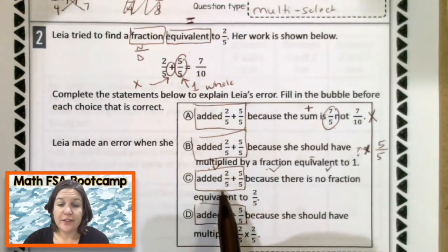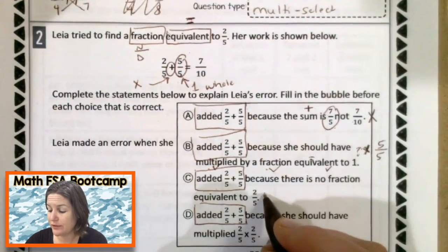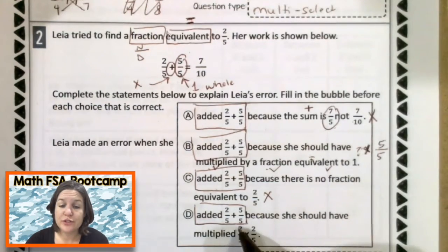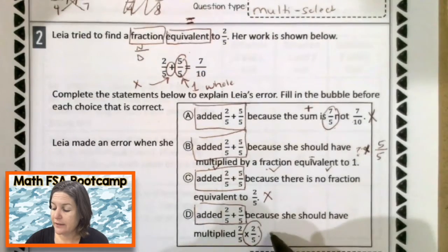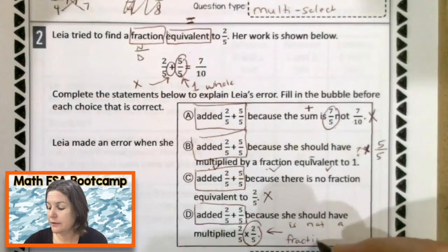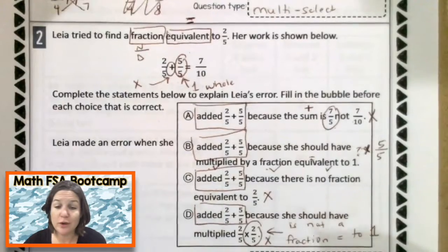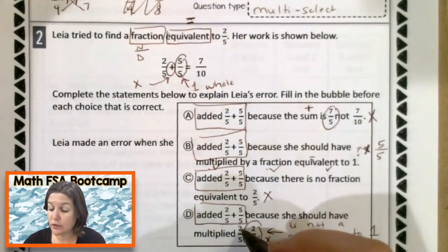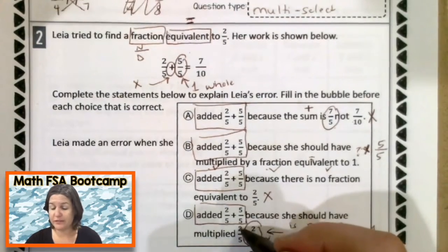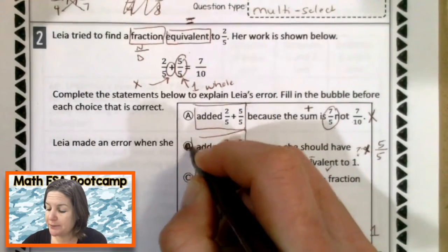C. She added two-fifths plus five-fifths because there's no fraction equivalent. Well, that's wrong because we can totally find a fraction that's equivalent to two-fifths. D. She added two-fifths plus five-fifths. That was wrong because she should have multiplied two-fifths times two-fifths. Well, if she did that, this is not a fraction equivalent to one whole. This is a fraction less than one, and that's not okay. So we can eliminate that. We don't want to multiply. We could multiply two-fifths times two-fifths, which would give us four twenty-fifths, but that would not give us a fraction that's equivalent to two-fifths. That would just be multiplying fractions. So it is not D. The correct answer was what? B. Bada-bing. Bada-boom. Okay.